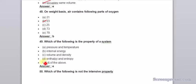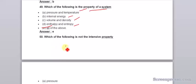Which of the following is the property of a system? All of the above are the property: pressure and temperature, internal energy, volume and density, enthalpy and entropy are the properties of a system. Heat is not the property of a system, remember it.